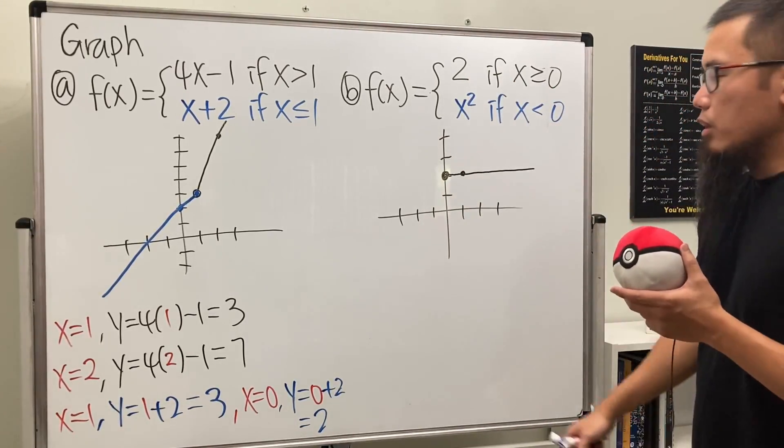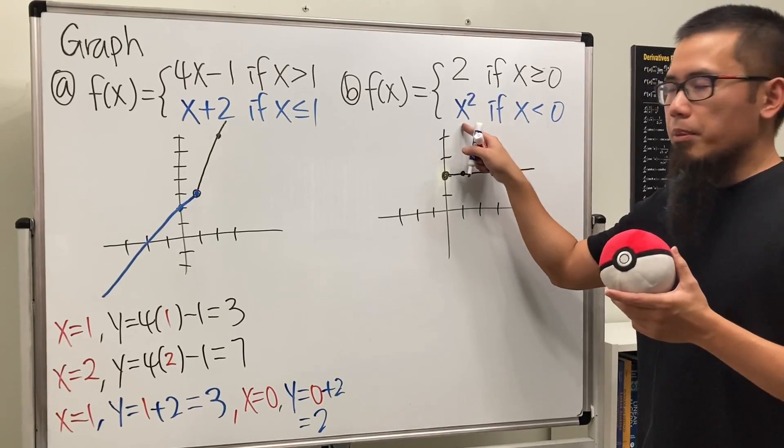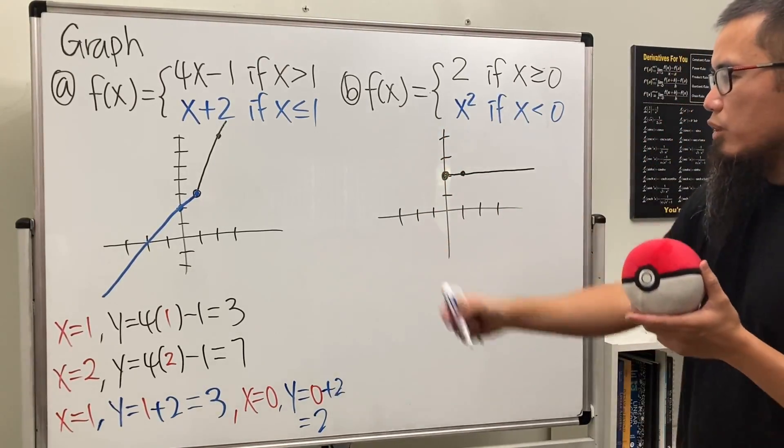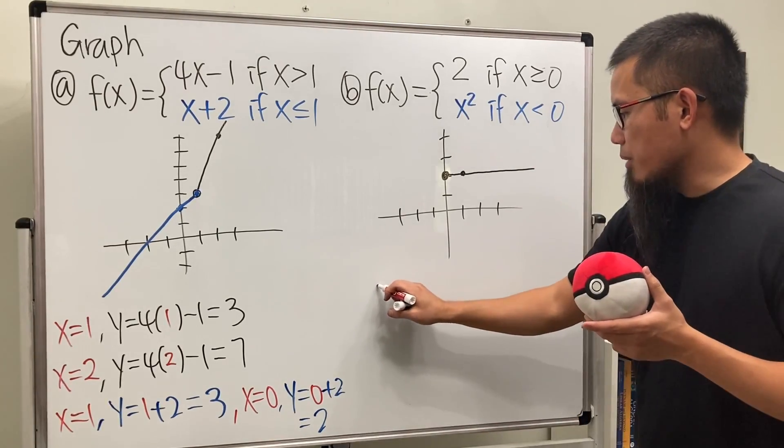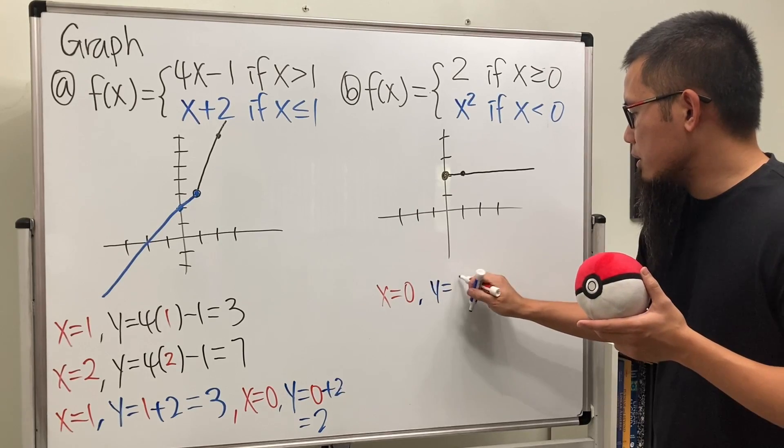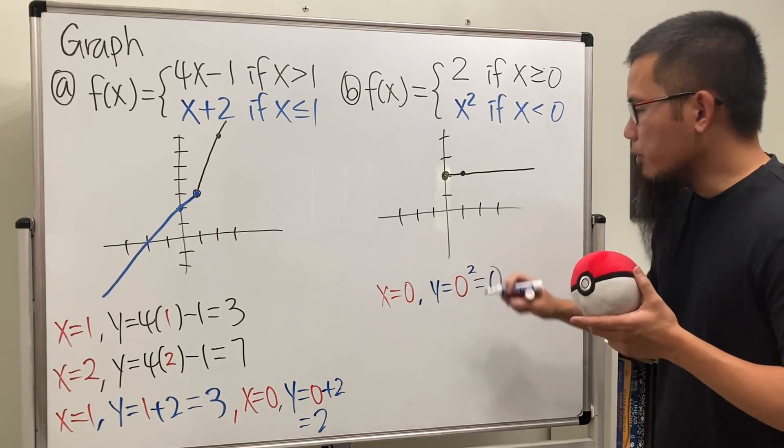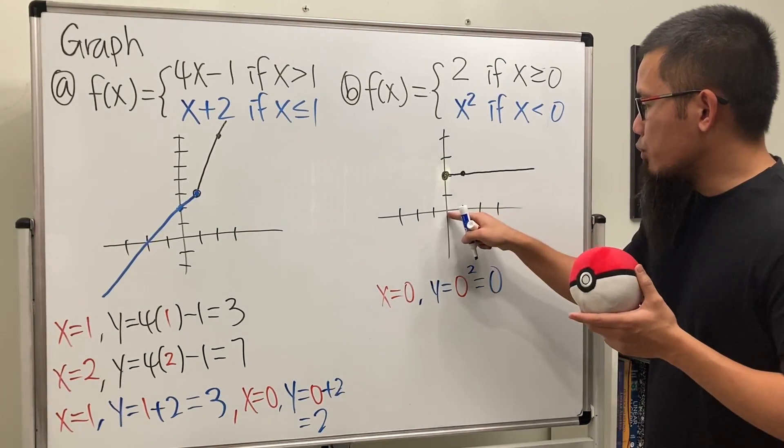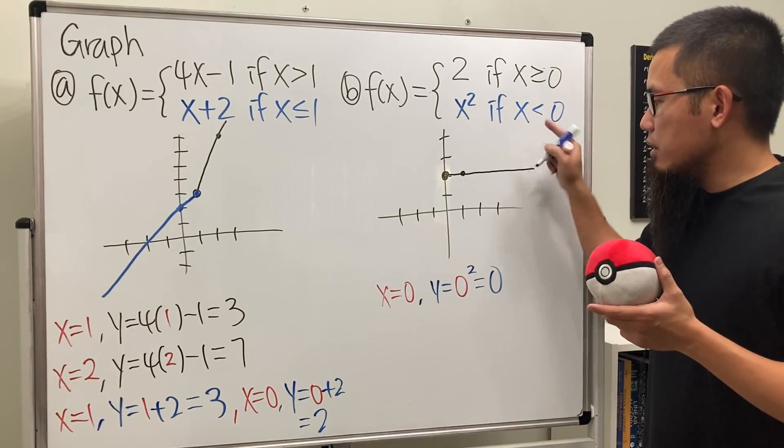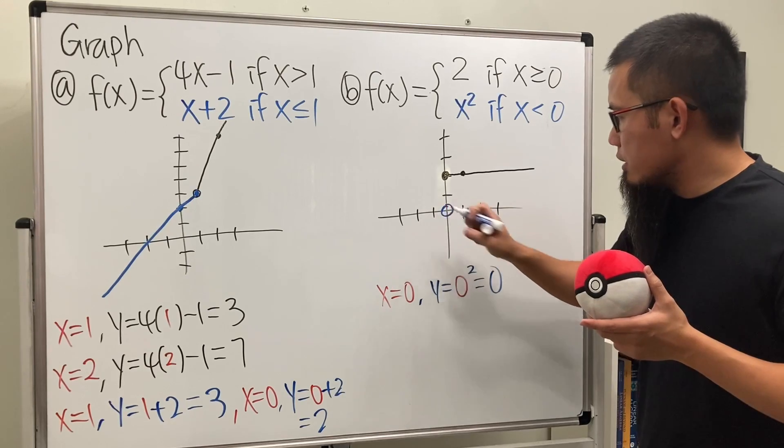Now, for the second piece, of course, it's just a good old parabola. It looks like this. And if you would like, you can also just do what we did over there. You can also plug in and compute. When x is 0, the y is going to be 0 squared, which is 0. 0, 0, it will be right here. But do not include that point because of the inequality. So open circle.